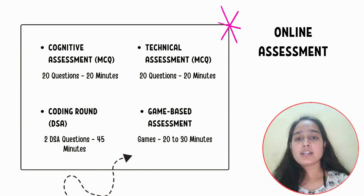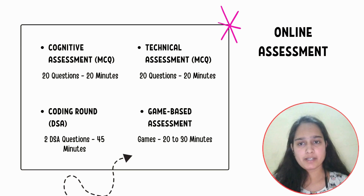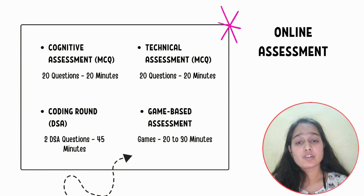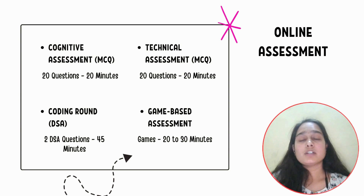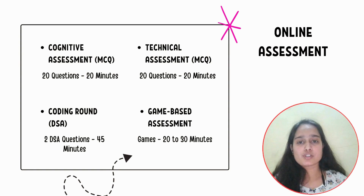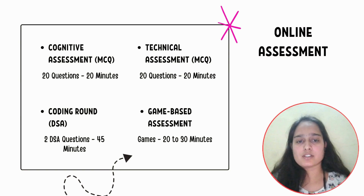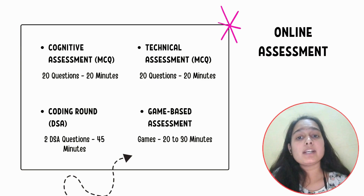The coding round is DSA-based, 45 minutes, with two questions. Questions can be from any data structure — arrays, strings, recursion, trees. Some questions asked in previous years include wildcard pattern matching, finding the greatest number among three numbers, and determining if a number is divisible by certain numbers within a given range. The level ranged from easy to hard. The tip is to revise all DSA topics regularly and revisit questions you solved 20 days ago so you don't forget your approach.